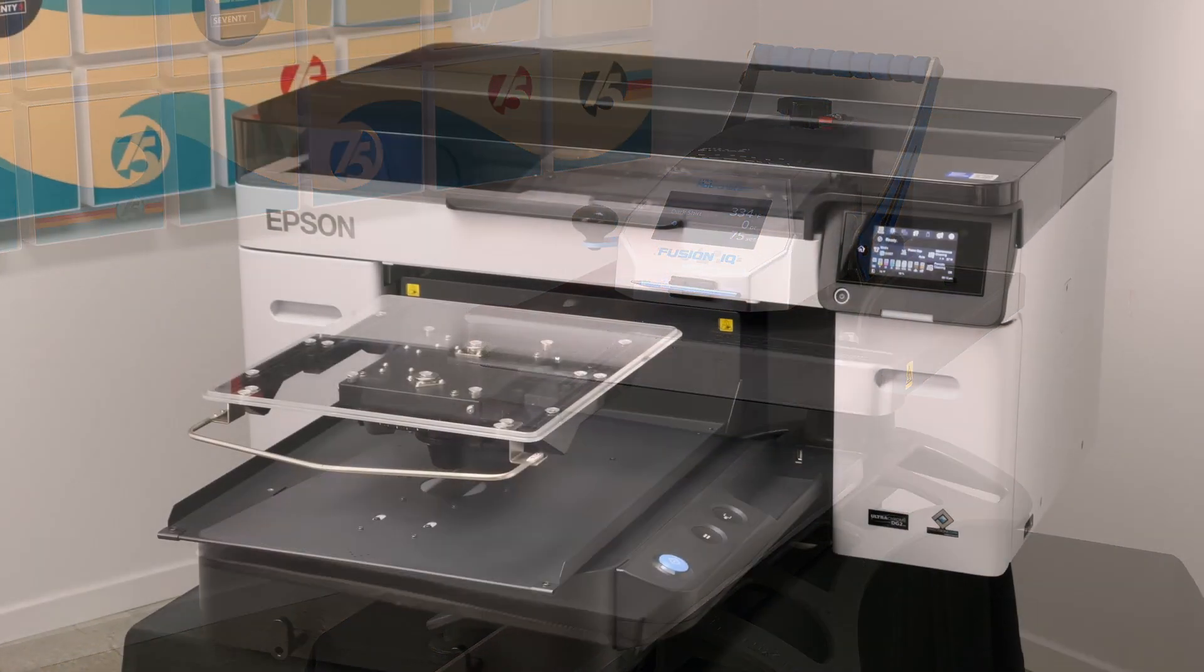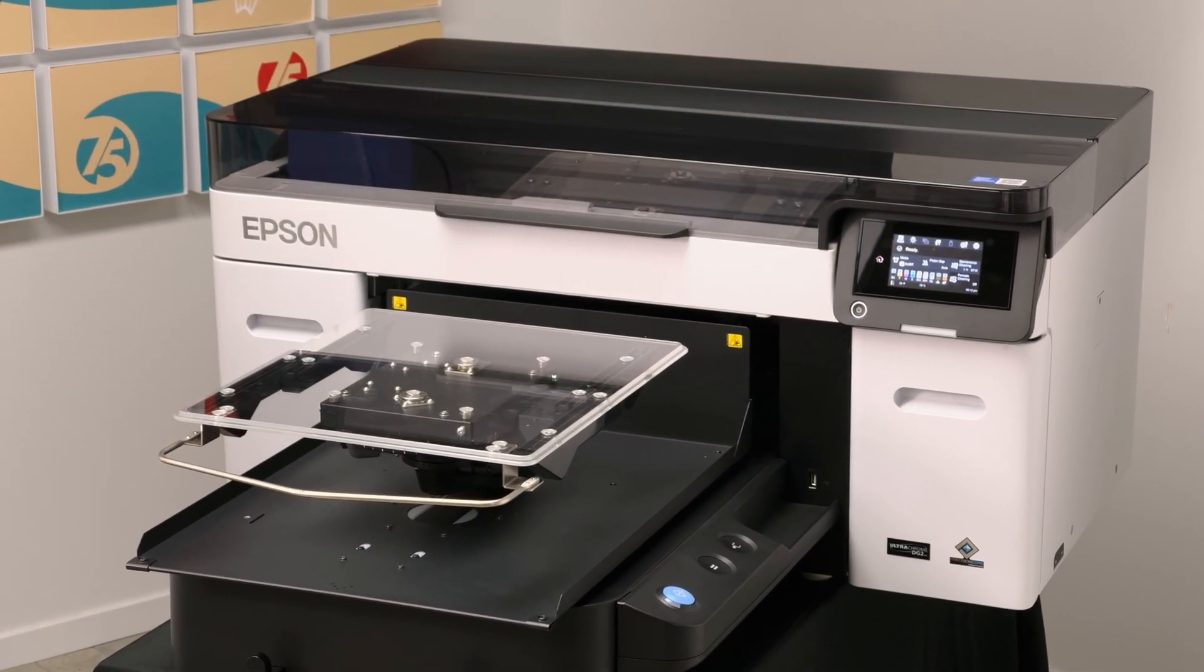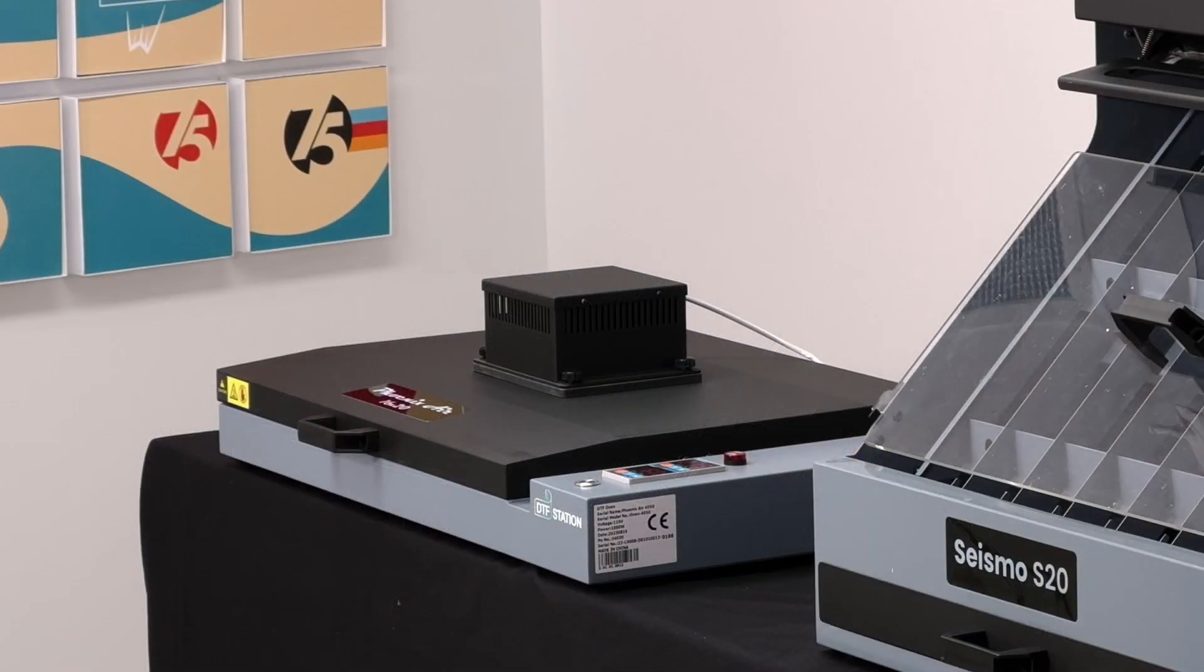You'll need a heat press, the Epson F2270 printer, a powder applicator, and a curing oven.